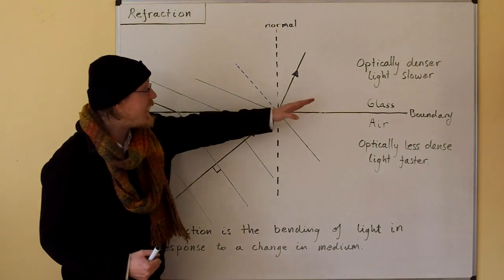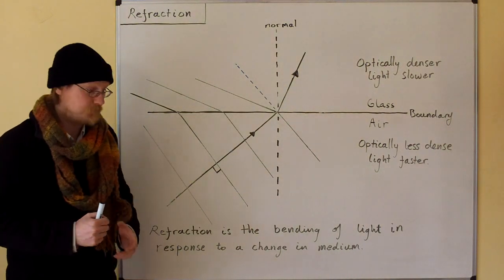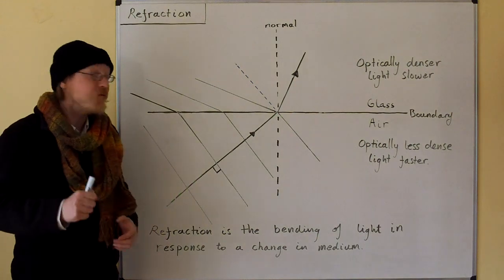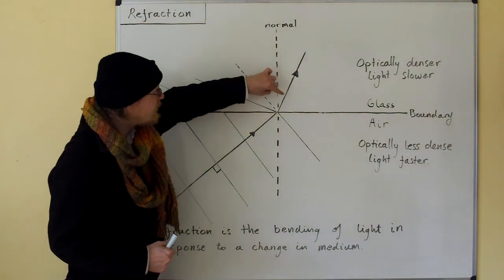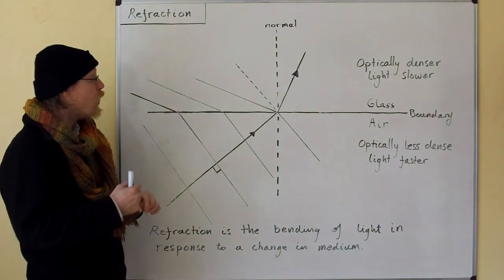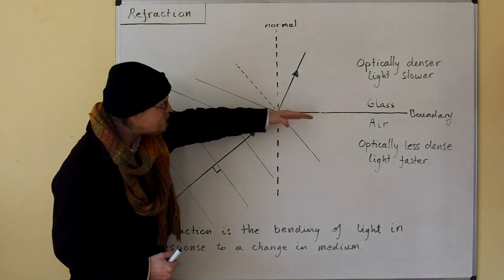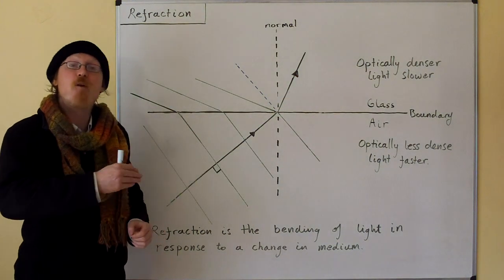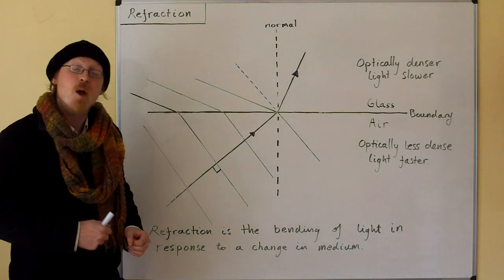If the light ray were traveling the other way, then what would happen is the wave fronts would be bent forwards of where they would be, and the light ray would be bent away from the normal.